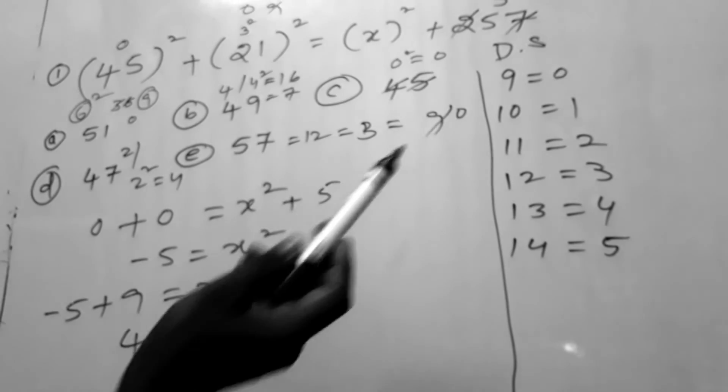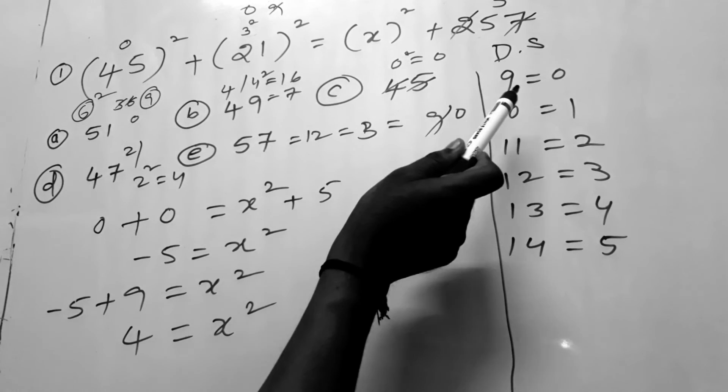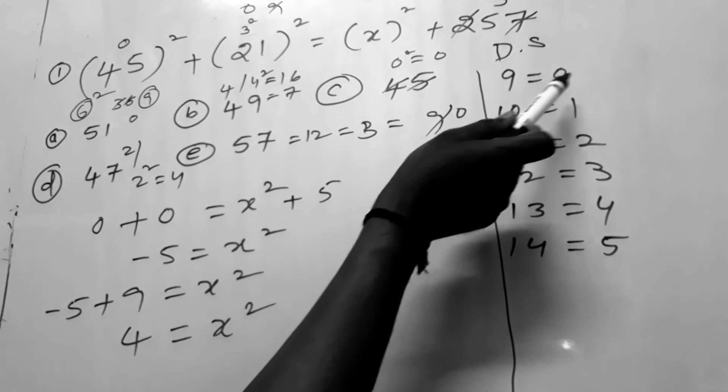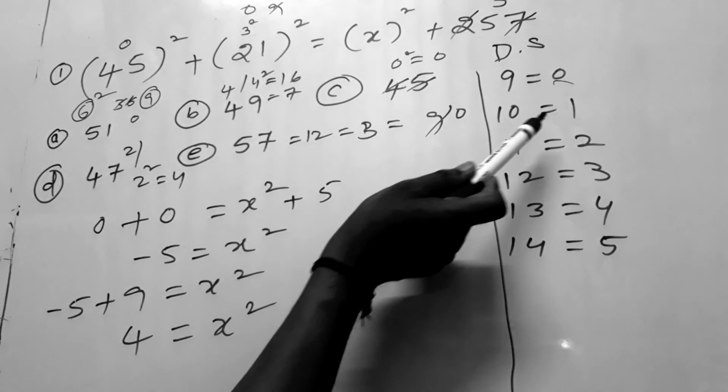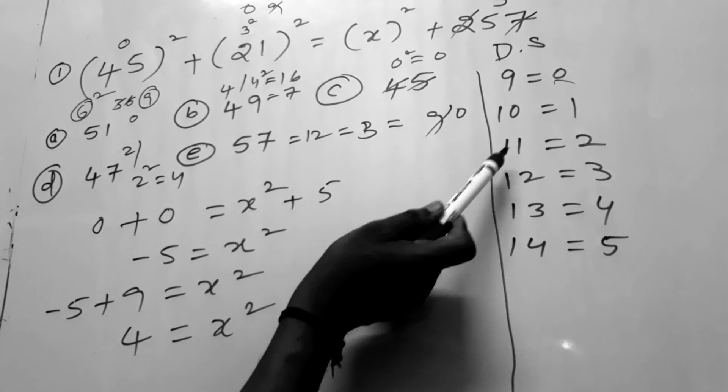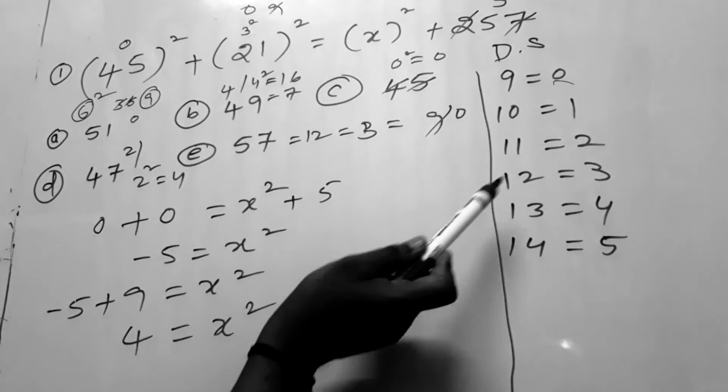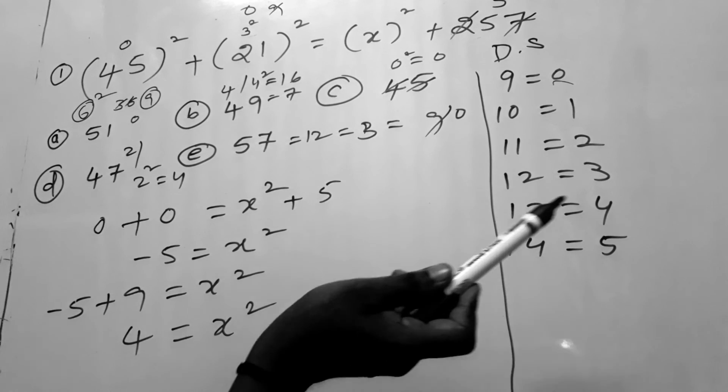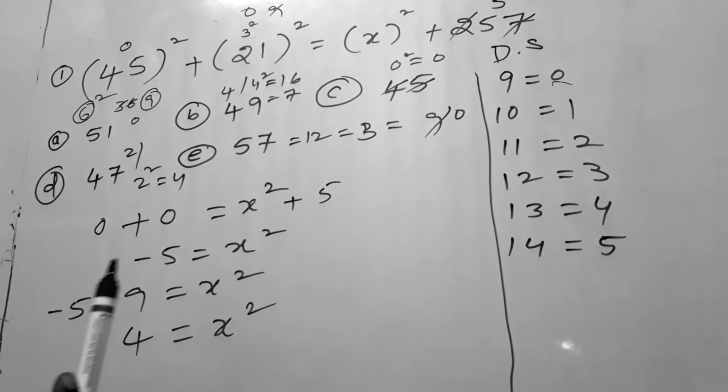If you look at any sum of digits that equals 9, then digital sum is always 0. 10 has digital sum 1, 11 has digital sum 2, 12 has digital sum 3, 13 has digital sum 4, 14 has digital sum 5.